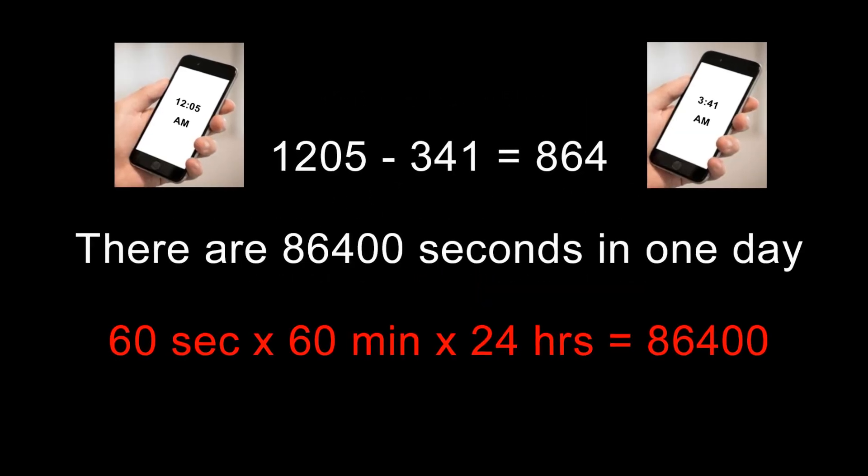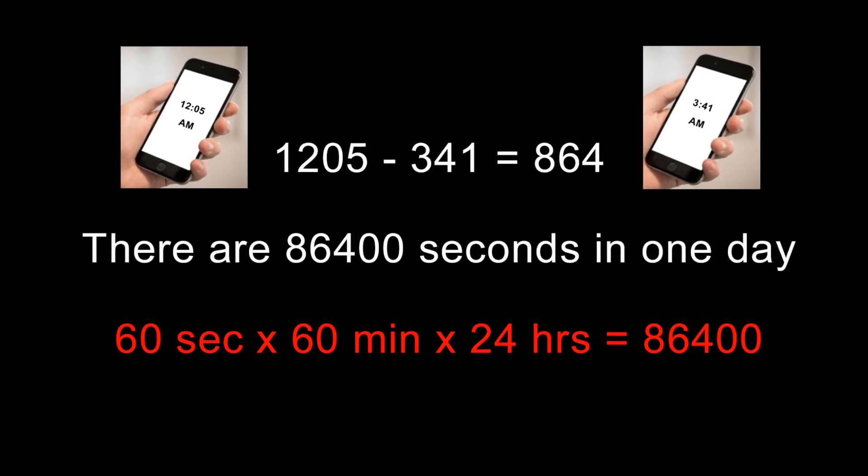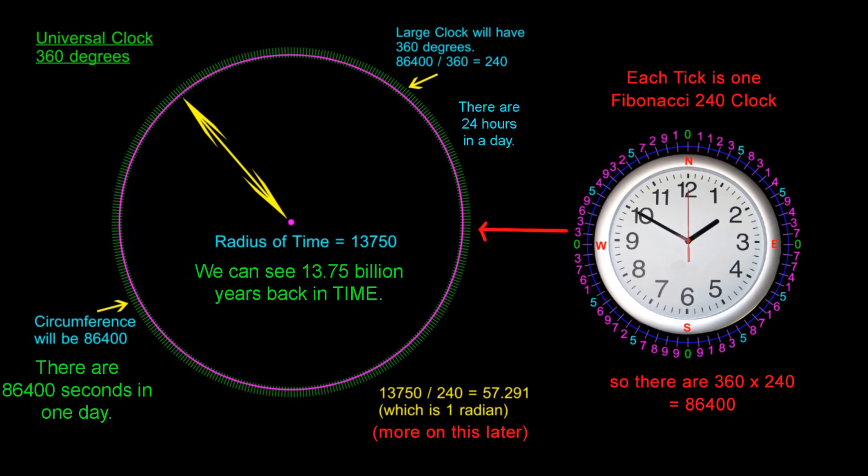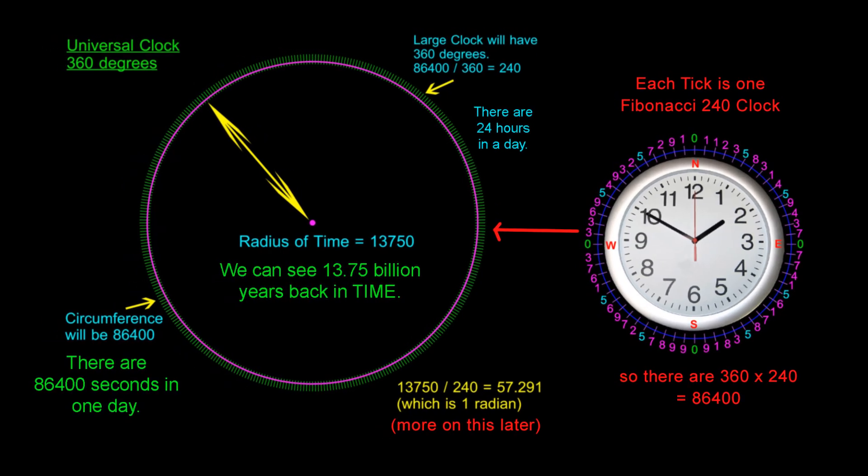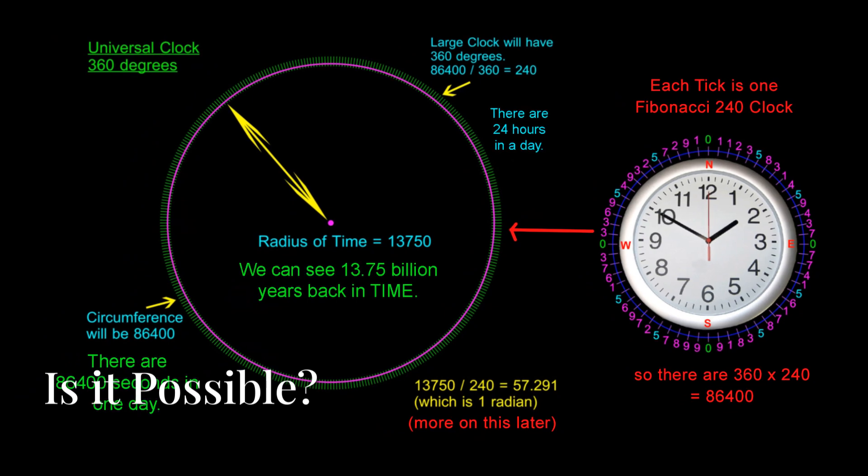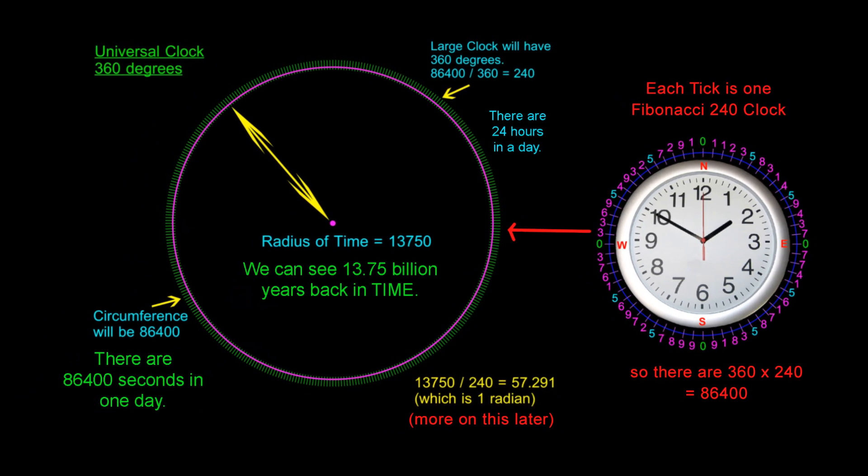And remember my blackout where I lost 216 minutes of time, where 1205 minus 341 equals 864. 864 units is the large cycle of time using our units of 60. How crazy is all of this?